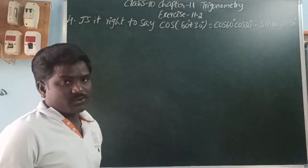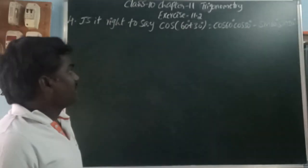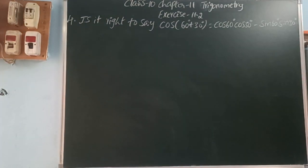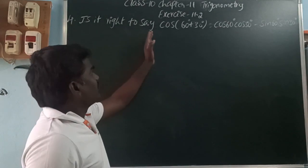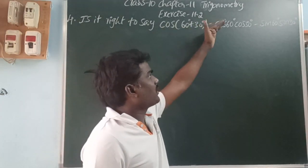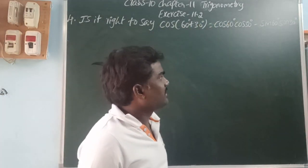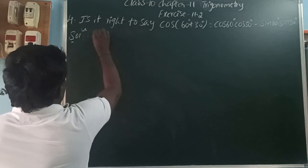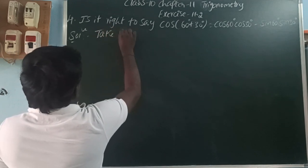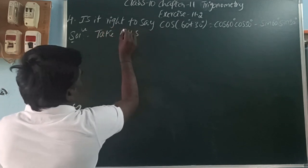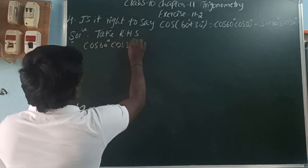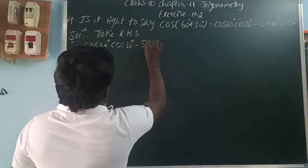Question 4: Is it right to say cos(60+30) is equal to cos60·cos30 minus sin60·sin30? So here, first take the RHS: cos60·cos30 minus sin60·sin30.